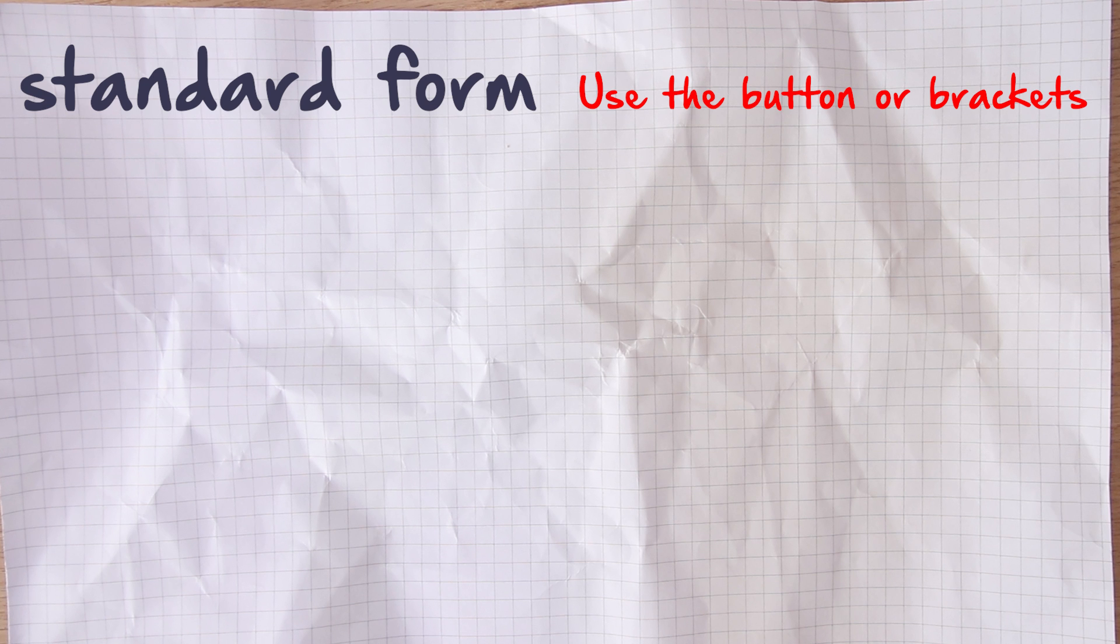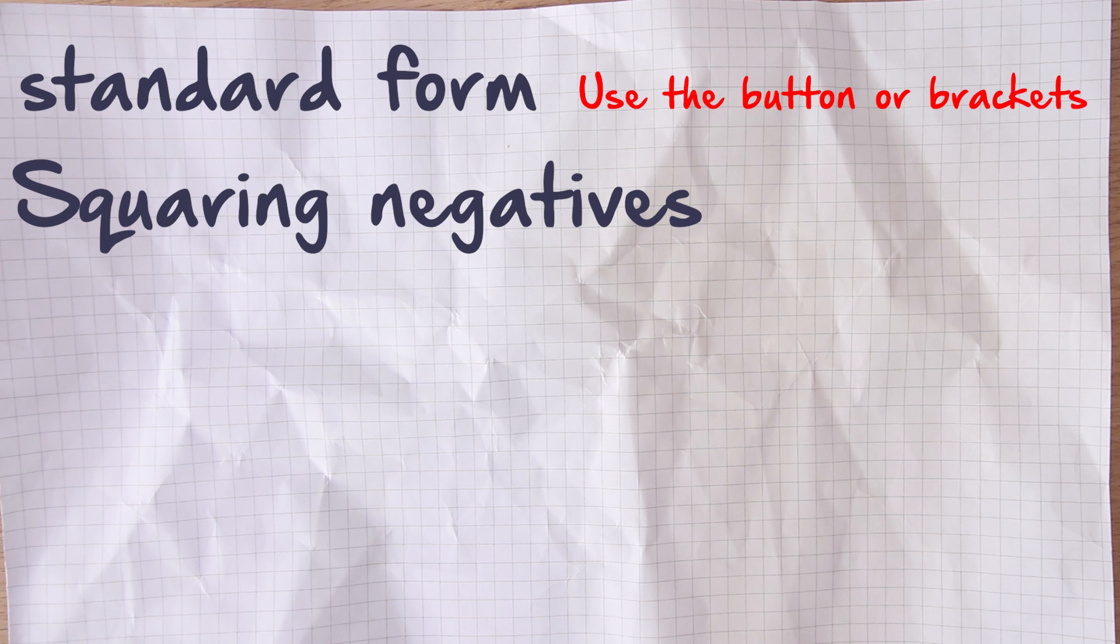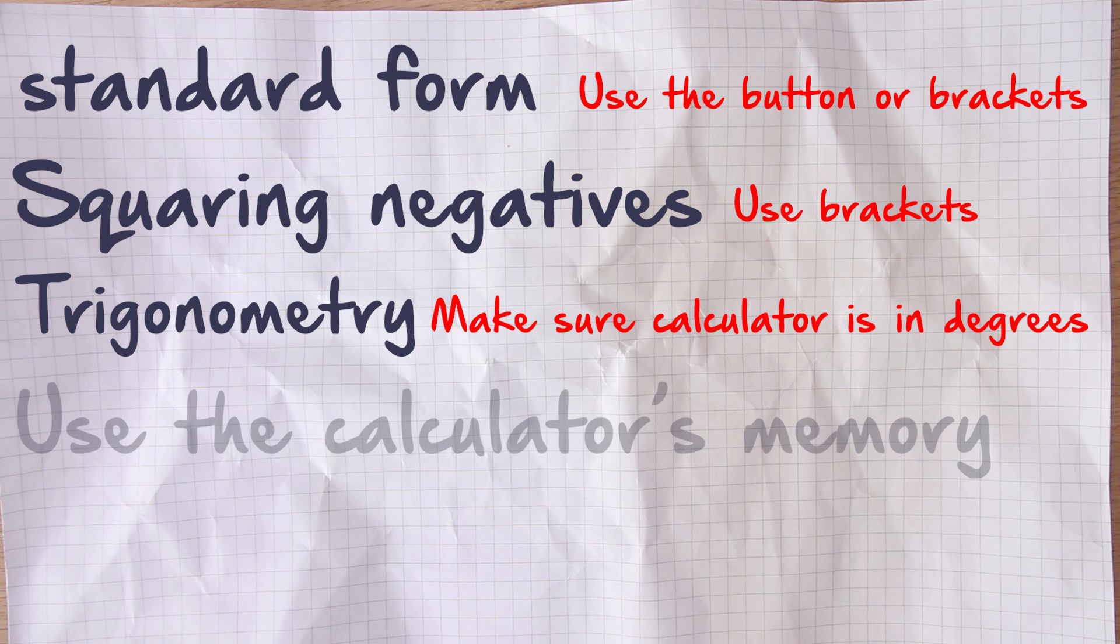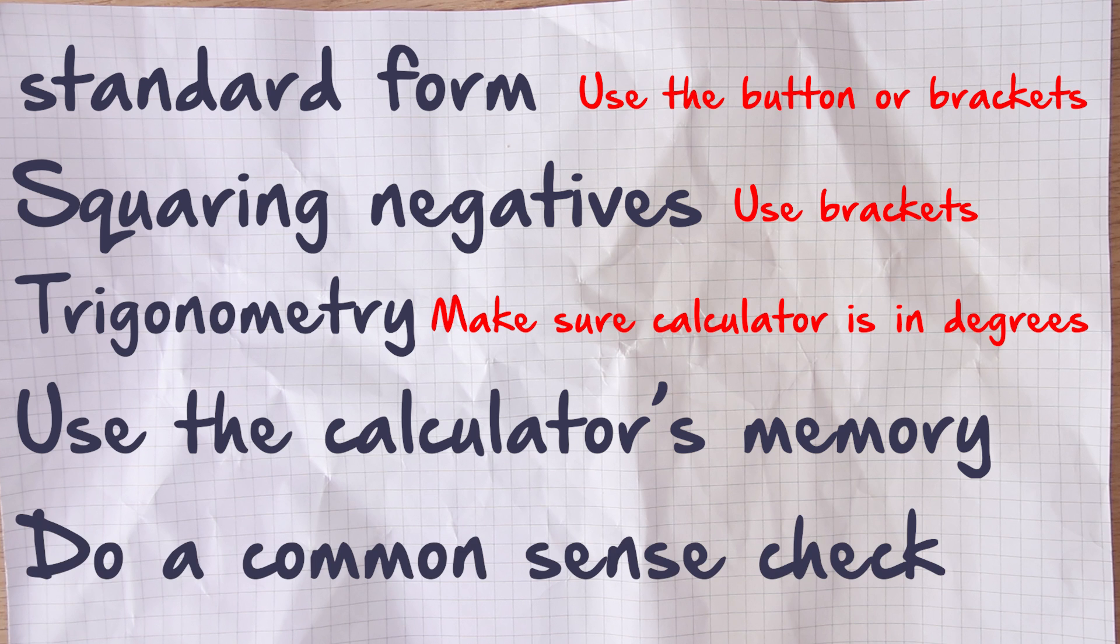So those are my tips for the calculator papers. When you're using standard form, either put it in brackets or use the standard form button on your calculator. When you are squaring negative numbers, make sure you put those in brackets as well. When you're solving trigonometry problems, make sure that your calculator is set to degrees. Wherever possible, use the ANS button instead of having to write lots of things down. And finally, don't trust your calculator. Just do a quick check at the end of every question, or at least wherever possible, just to ask yourself whether the answer seems plausible.